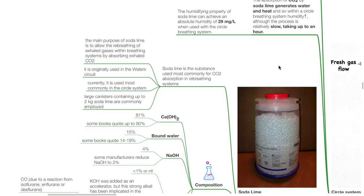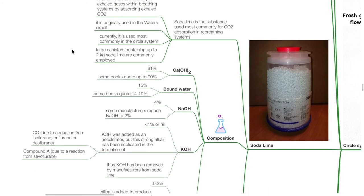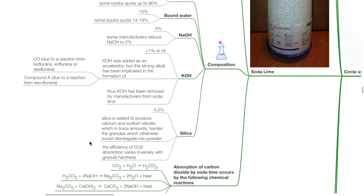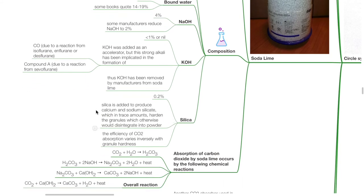Soda lime is the substance most commonly used for CO₂ absorption in rebreathing systems. Its main purpose is to allow rebreathing of exhaled gases by absorbing exhaled CO₂. Large canisters containing up to 2 kg of soda lime are commonly employed. Soda lime composition: Ca(OH)₂ 81%, bound water 15%, NaOH 4%, KOH less than 1% or nil. KOH was added as an accelerator but this strong alkali has been implicated in the formation of carbon monoxide from isoflurane, enflurane or desflurane, and compound A from sevoflurane — thus KOH has been removed by manufacturers. Silica 0.2% is added to produce calcium and sodium silicate which hardens the granules; the efficiency of CO₂ absorption varies inversely with granule hardness.